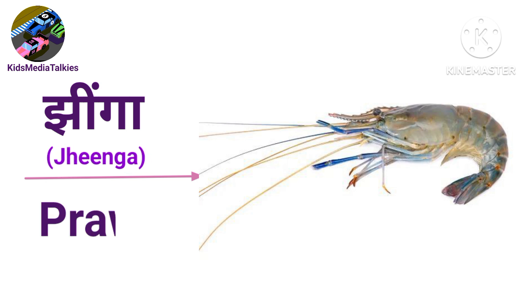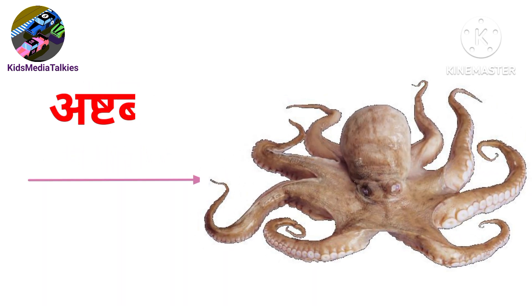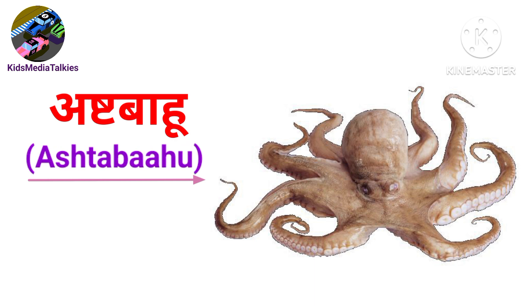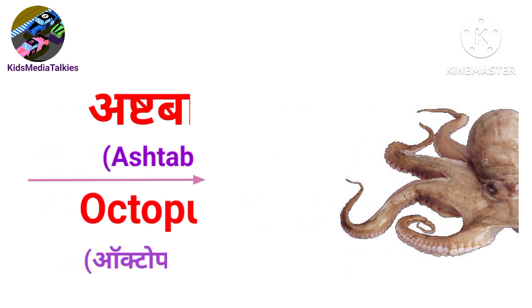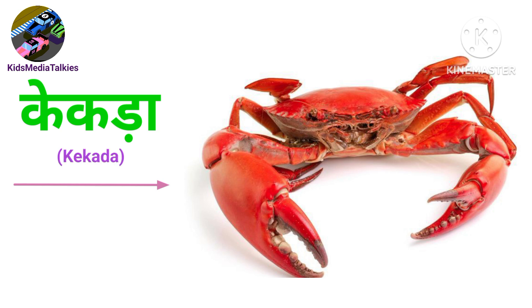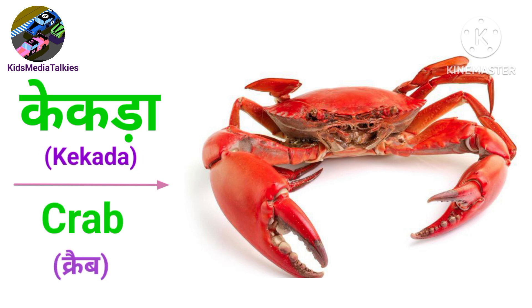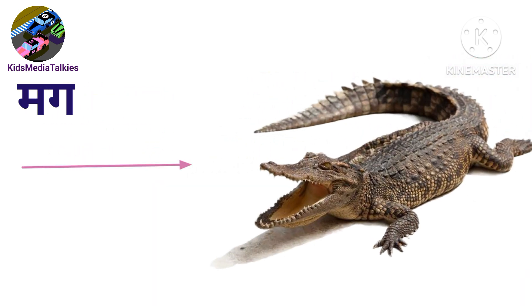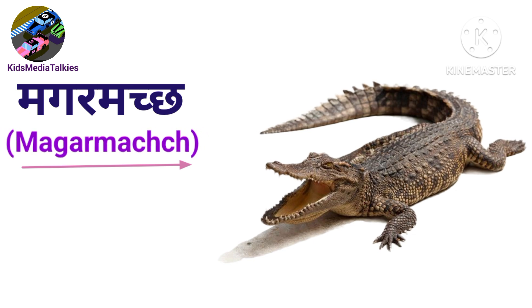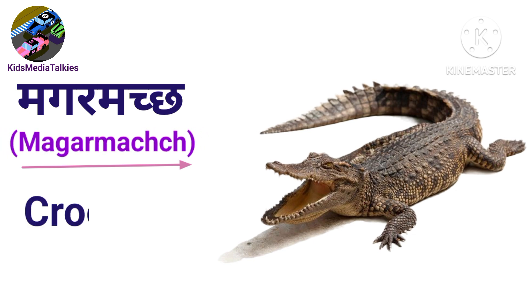Jhinga — prawn. Ashtabahu — octopus. Kekada — crab. Magarmach — crocodile.